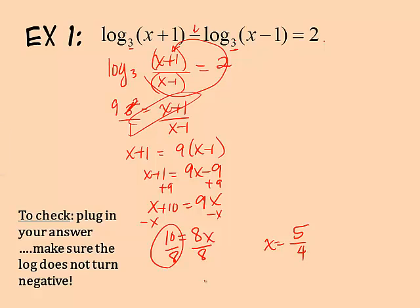When you're doing longer equations, make sure the value you end up with is legitimate. You cannot take a logarithm of a negative number. Five fourths is one and one fourth, so if I put it back into my equation, the first logarithm—one and one fourth plus one—is still positive, and one and one fourth minus one is still positive one fourth, so it works. This is a good solution. Sometimes we have extraneous solutions that do not work when you put them back in the equation.